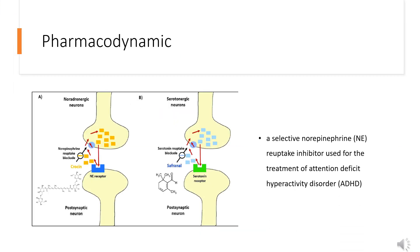Pharmacodynamic. Dexmethylphenidate is the D-enantiomer of methylphenidate. This enantiomer is more pharmacologically active than the racemic mixture and may block norepinephrine and dopamine reuptake in synapses.